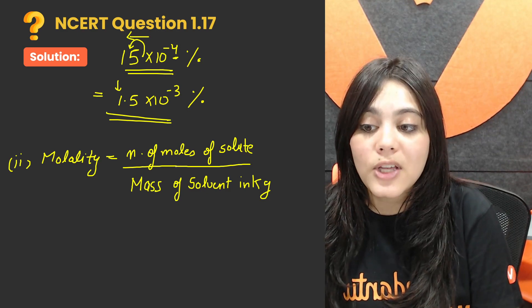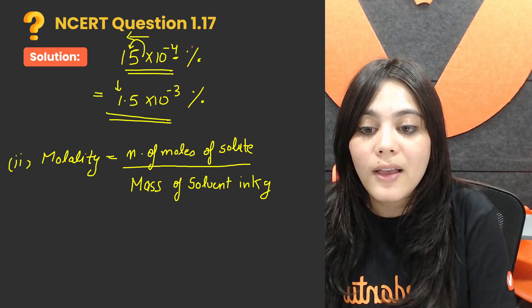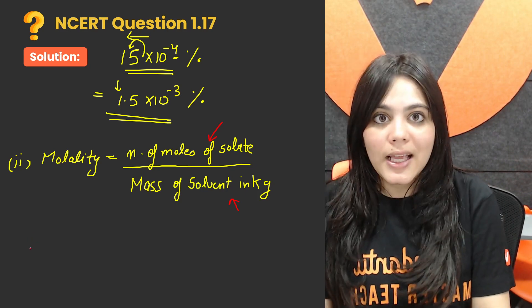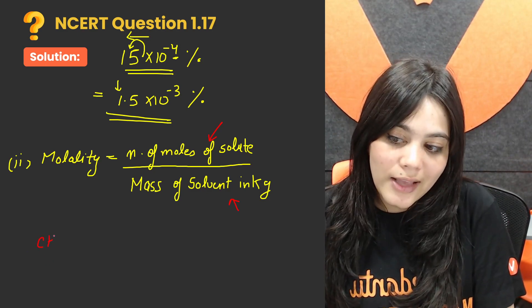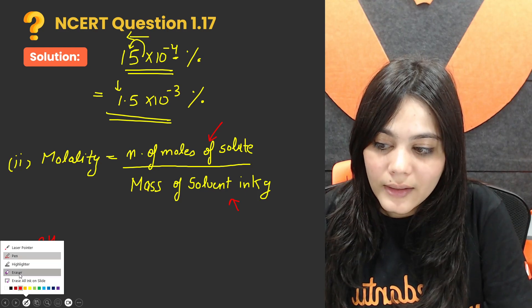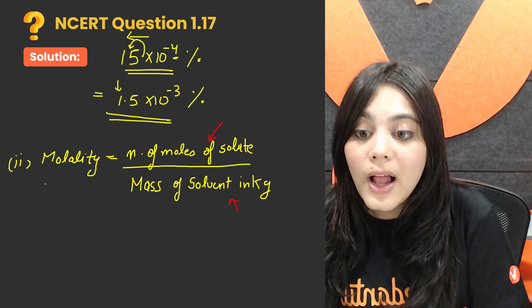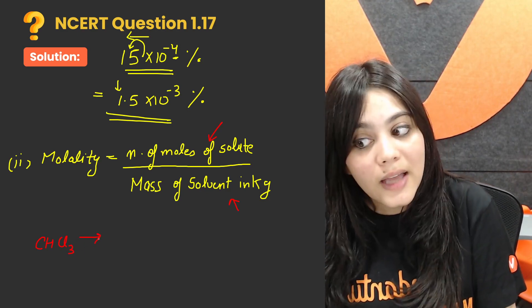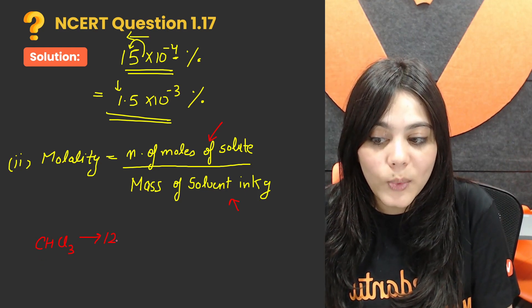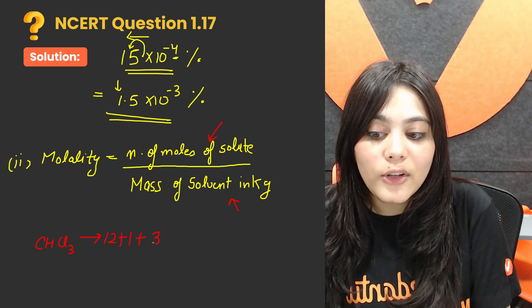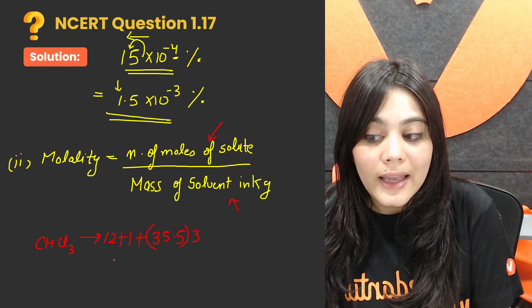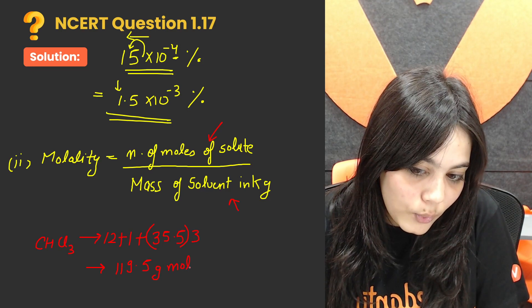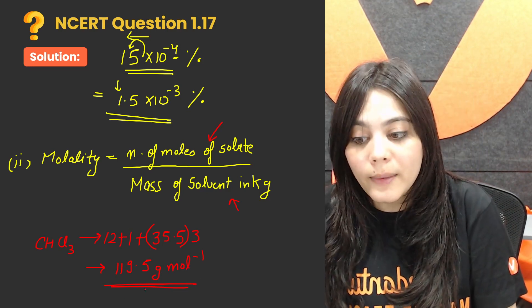Now we have two things to know. First of all, what are the moles of solute? And second is the mass of solvent in kg. So step one is moles of solute. Solute, which one is? CHCl3. Chloroform is the solute. CHCl3 molar mass we have to find. Carbon is 12, plus hydrogen is 1, plus chlorine is 35.5, but chlorine is 3. From this, the molar mass of chloroform is 119.5 grams per mole.